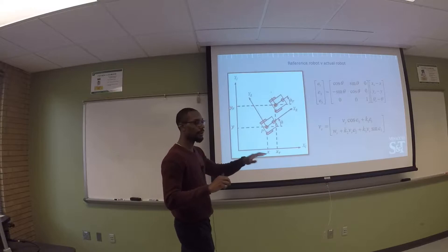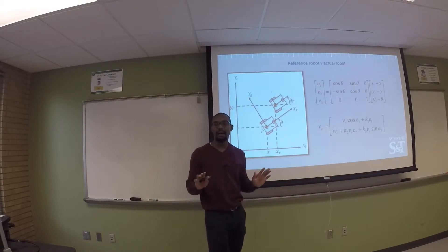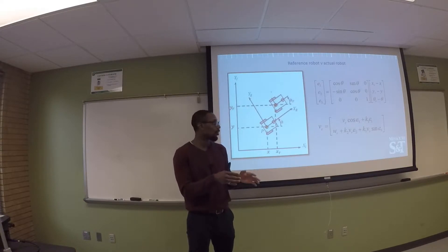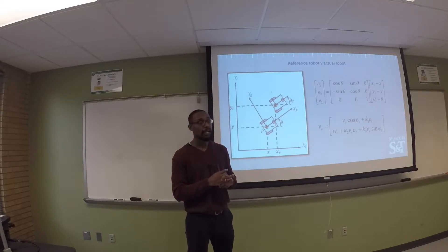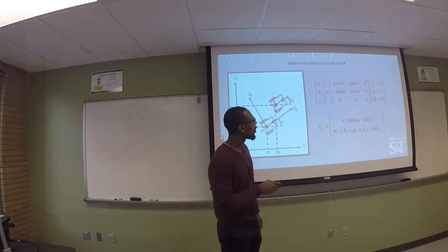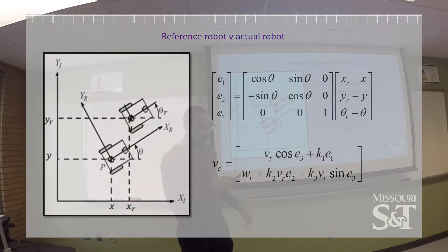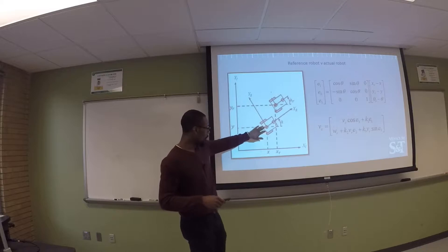The idea is that we have a reference robot that describes where we want to be at a particular time instance, and our approach is to drive the actual robot to the reference robot's location and orientation. We use variables xr, yr, and theta r for the reference robot's pose, and x, y, and theta for the actual robot's pose. We use a rotation matrix to map the errors between the actual and reference robot's locations and poses into the world frame, defining them as E1, E2, and E3.